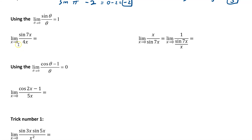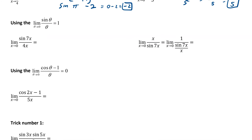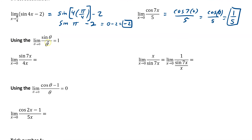Now if we have a domain issue — like x is approaching 0 — you plug in 0 and we're getting 0 over 0, just like before with direct substitution. So that's telling us we're allowed to simplify. We're going to be using our sine theta over theta equals 1 rule. We go limit as x approaches 0, and then we need to turn that denominator into 7x, just like that 7x in the numerator.